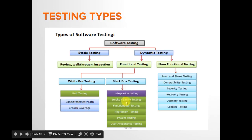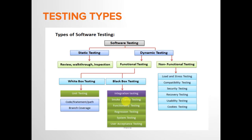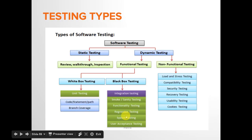This is further followed by smoke and sanity testing, which means testing the critical functionalities of your application. For example, on a website, until the URL is accessible and a user can log in or register, many tasks cannot be performed. These critical functionalities need to be checked and passed — it's essentially a build verification activity where the tester gains enough confidence that the build is stable.